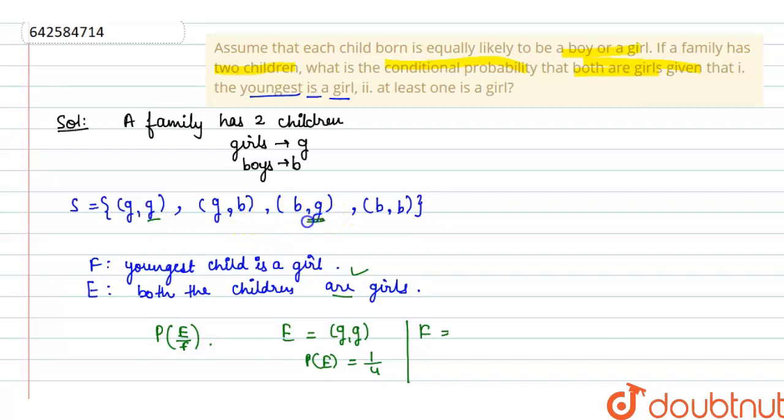We can see there are two cases in which the second position is girl. Either girl-girl or boy-girl. So total two cases. The probability of F is 2 upon 4, or 1 upon 2.